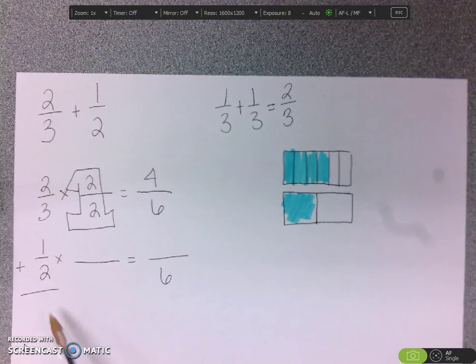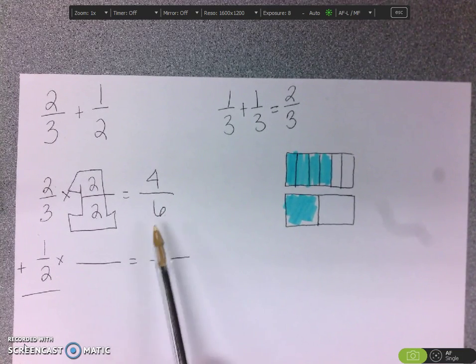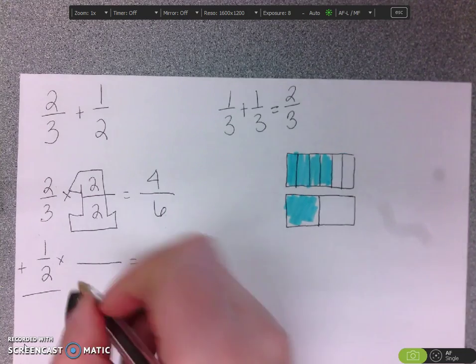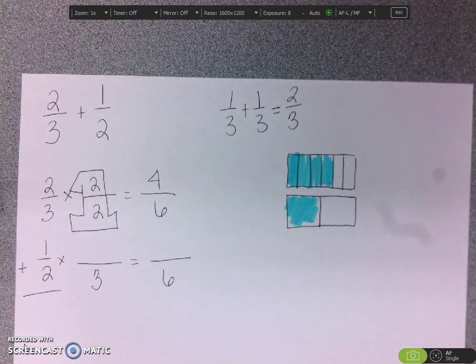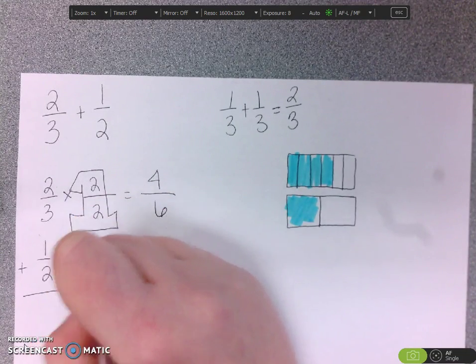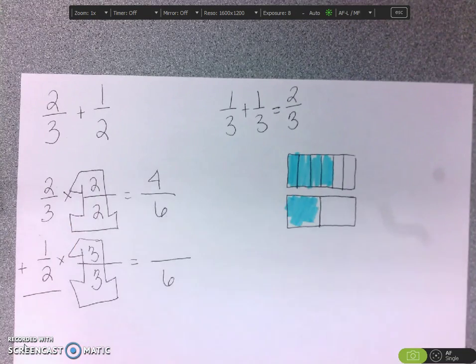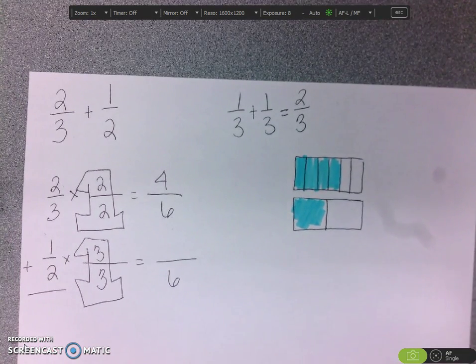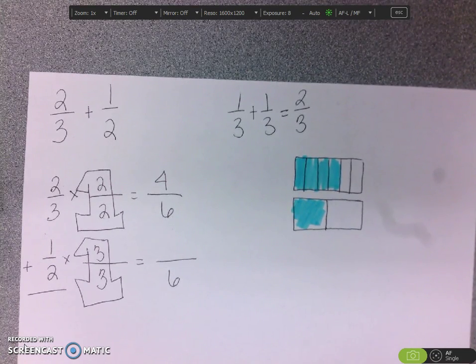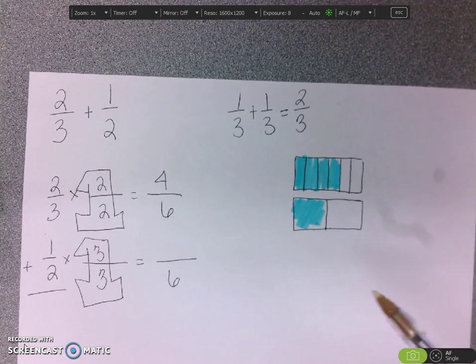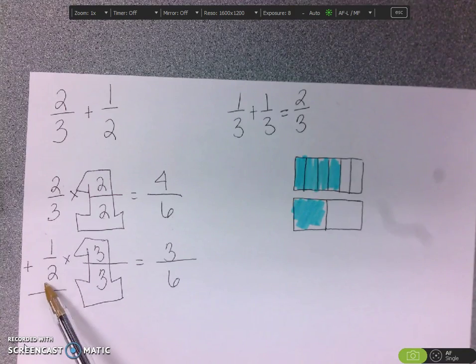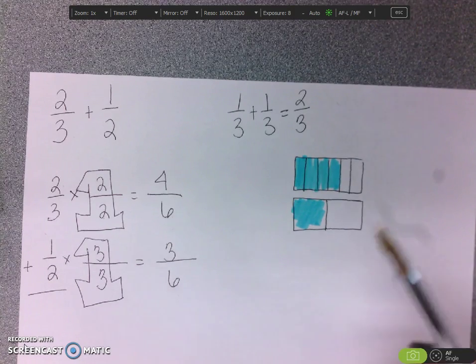Let's look at one-half now. Remember, we said that we were changing them both into six. So two times what gives you six? So that would be three. And what I do to the bottom, I have to do to the top, because that's the same as multiplying by one whole. And we don't want to change the value. We just want to change how many slices there are. So when we multiply by one whole, that has the identity property of multiplication. So one times three is three. So one-half is the same thing as three-sixths.